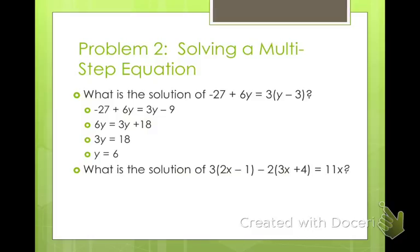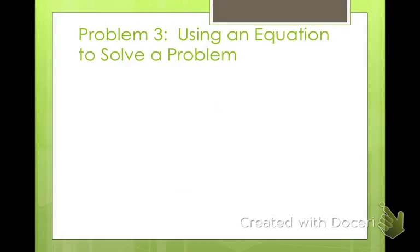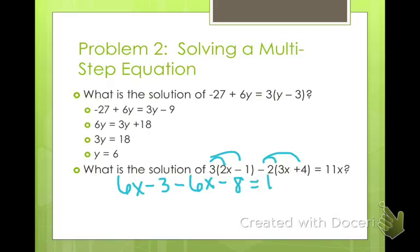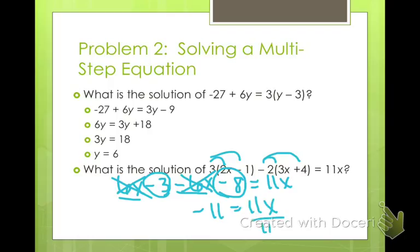Go ahead and pause the video and try this one. Distribute: 6x minus 3 minus 6x minus 8 equals 11x. Combining like terms on the same side, 6x and negative 6x cancel, and negative 3 minus 8 is negative 11, so negative 11 equals 11x. Divide both sides by 11: x equals negative 1. Hopefully you got that — go back and check your answer.